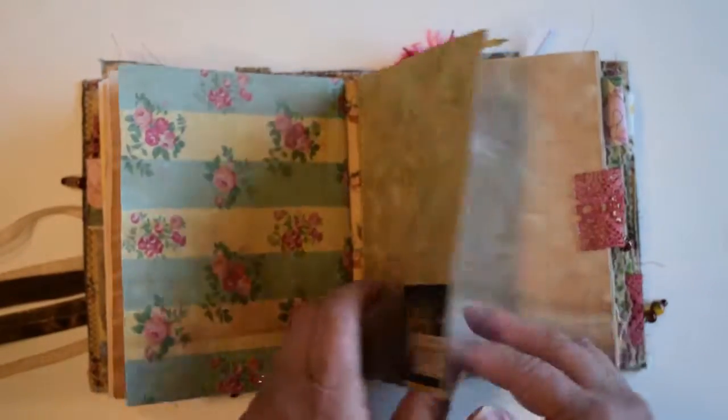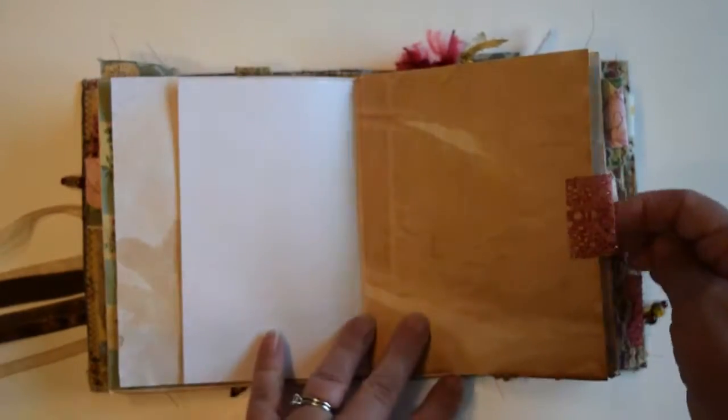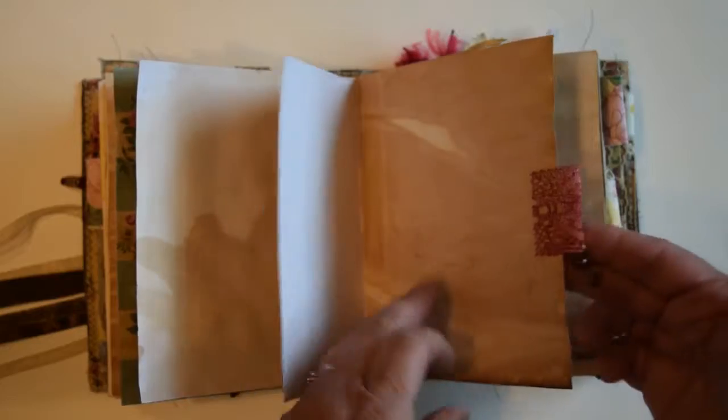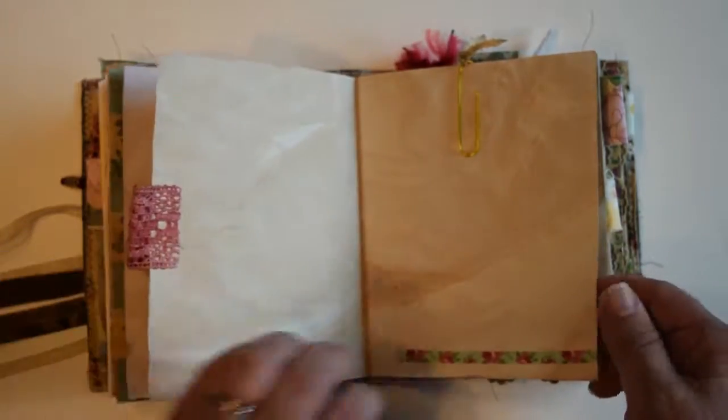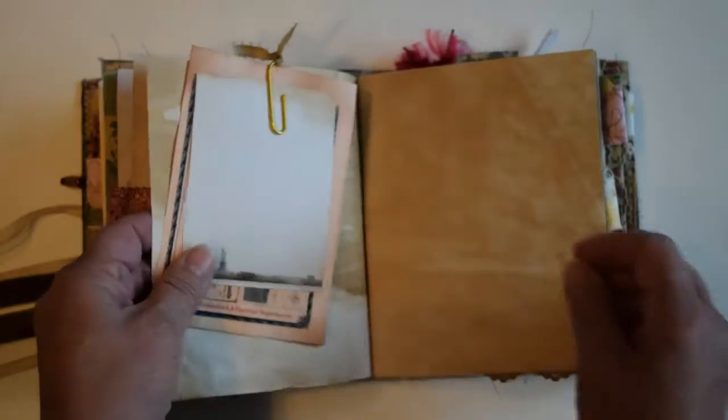This is actually a little pocket too, I don't have anything tucked in there right now. Patterned paper. Here's another bead dangle with a lace tab, a little washi tape down here. Here's a clip with some ephemera attached.